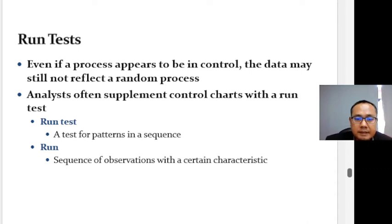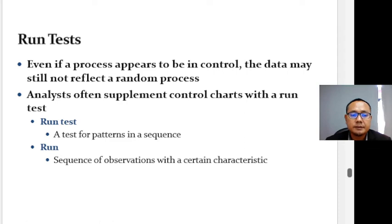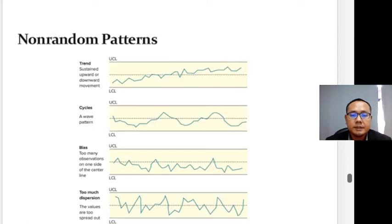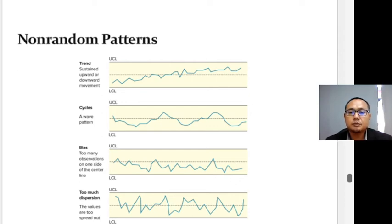Control charts test for points that are too extreme to be considered random — points outside the control limits. However, even if all points are within the control limits, the data may still not reflect a random process. Any sort of pattern in the data would suggest a non-random process. This figure illustrates some patterns that might be present. It is often useful to supplement control charts with a run test to check for patterns in a sequence of observations, enabling analysts to better detect abnormalities and provide insight into correcting processes that are out of control.